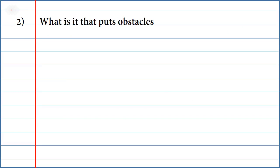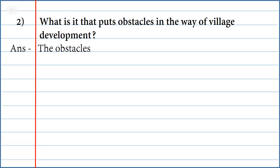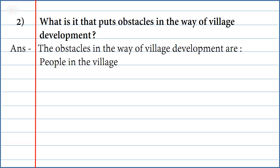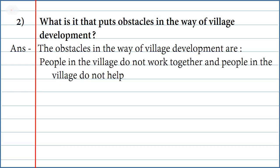Second question: What is it that puts obstacles in the way of village development? Answer: The obstacles in the way of village development are that people in the village do not work together and people in the village do not help one another.